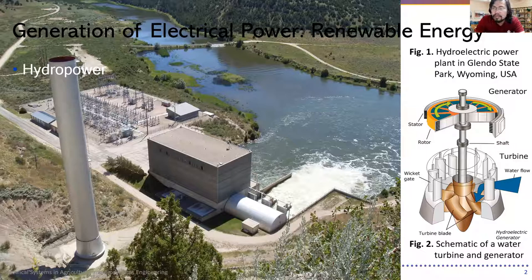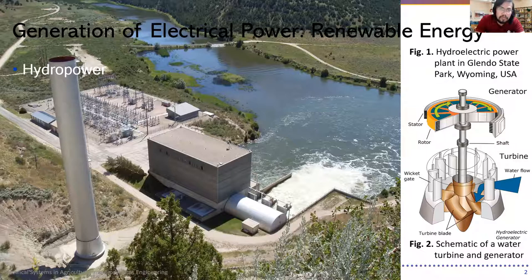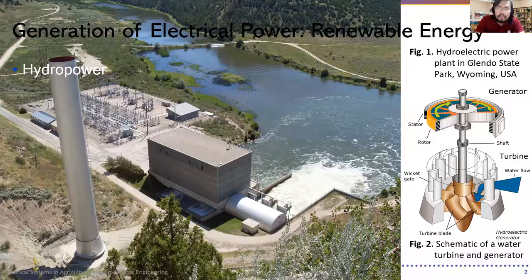We know from physics that water levels to the bottom of a certain topography. In hydropower, it is important to have water at a considerable height compared to where the energy will be harnessed. That height is referred to as the head of the water, and it is this potential energy that drives the turbine, which is connected to a generator to convert the rotary movement into electricity.